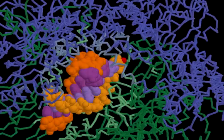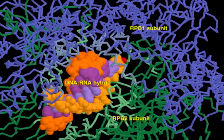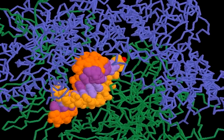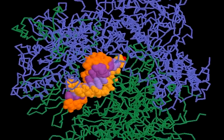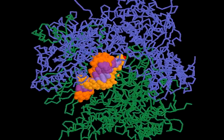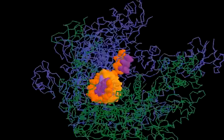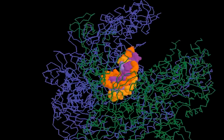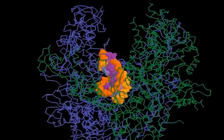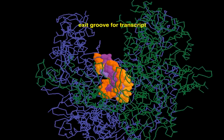In the active site of RNA polymerase II, a single-stranded DNA template is transcribed into a complementary RNA transcript. The initial product is a DNA-RNA hybrid from which the newly synthesized RNA strand is stripped off. It leaves the polymerase via an exit groove on the protein surface.